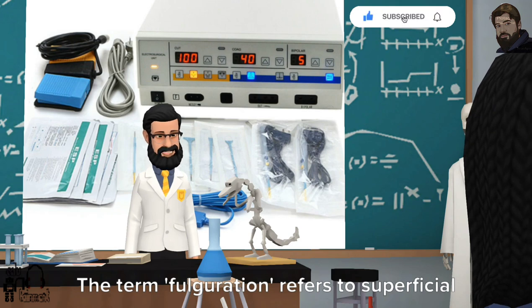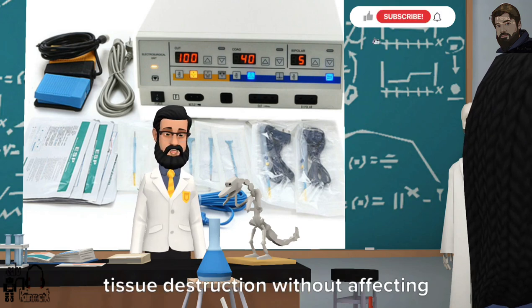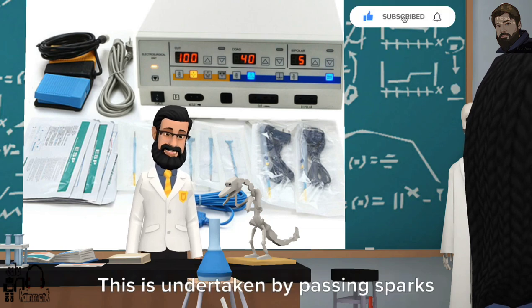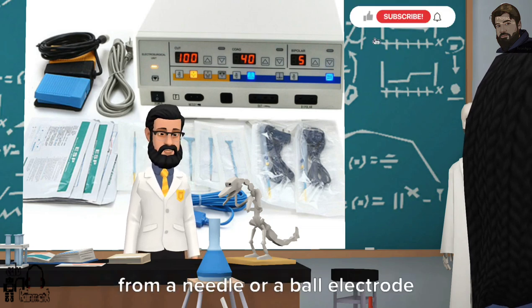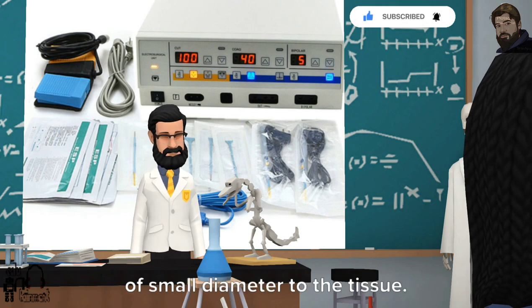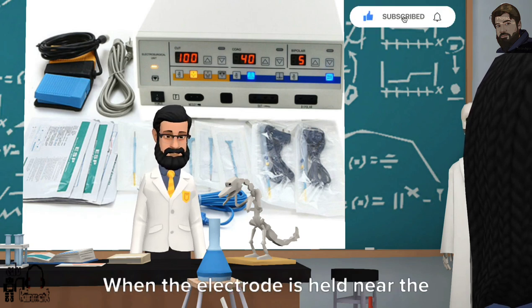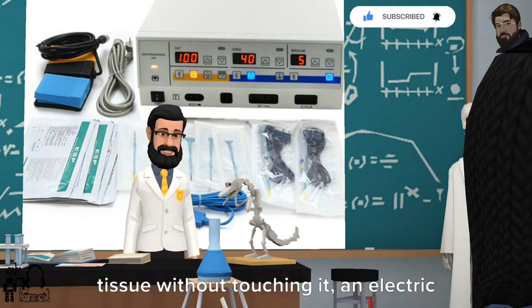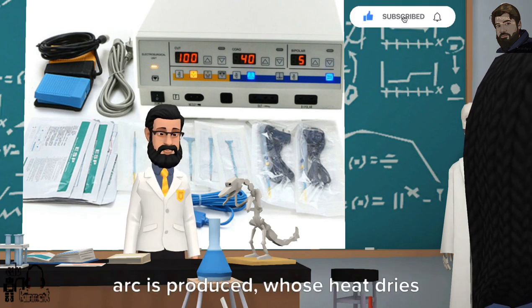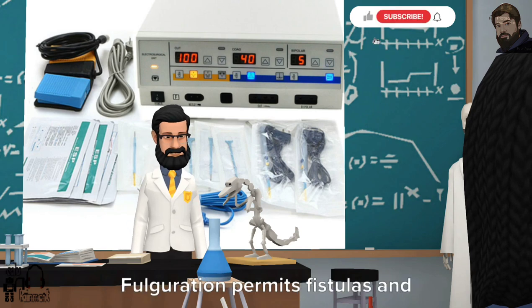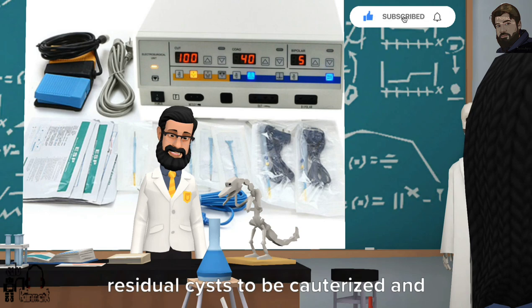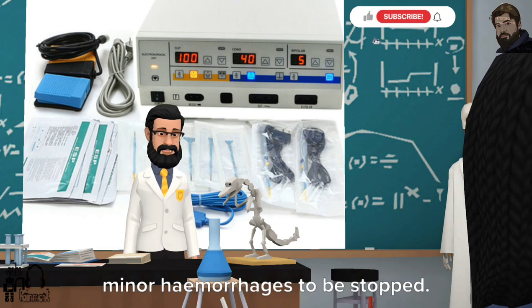What is fulguration? The term fulguration refers to superficial tissue destruction without affecting deep-seated tissues. This is undertaken by passing sparks from a needle or a ball electrode of small diameter to the tissue. When the electrode is held near the tissue without touching it, an electric arc is produced whose heat dries out the tissue. Fulguration permits fistulas and residual cysts to be cauterized and minor hemorrhages to be stopped.